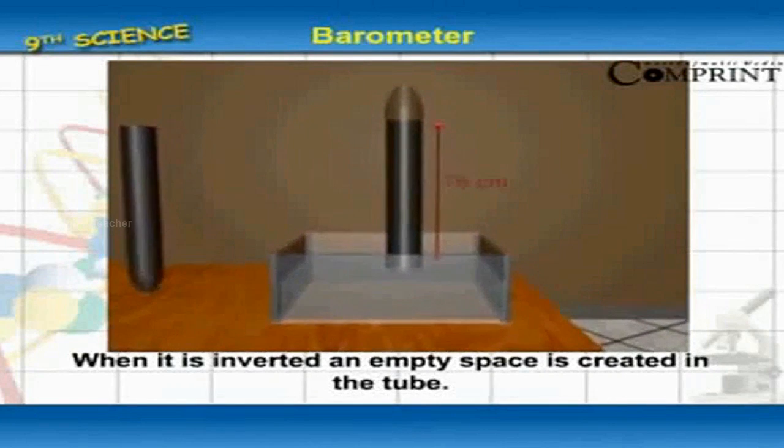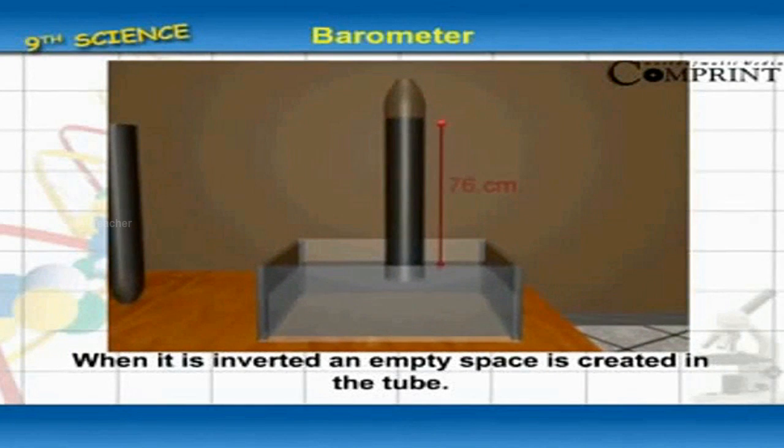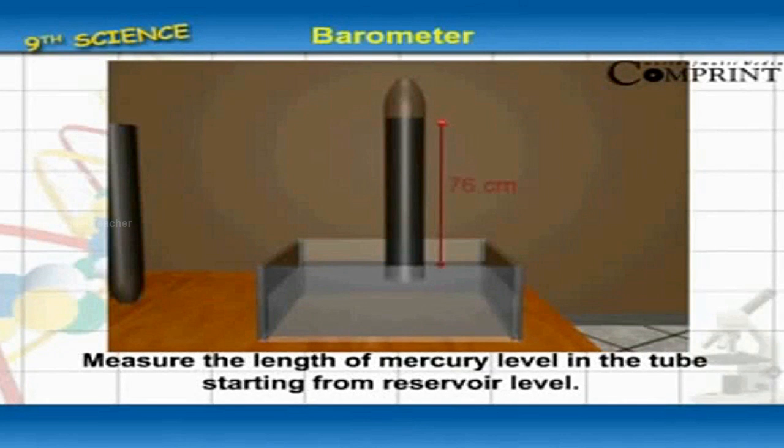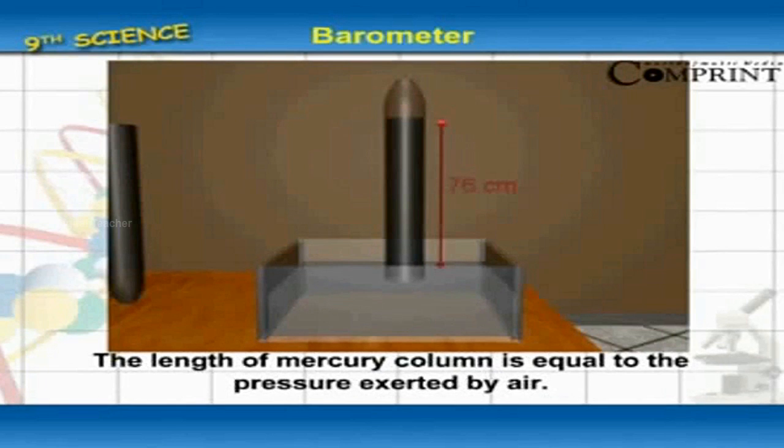When it is inverted, an empty space is created in the tube. Measure the length of mercury level in the tube starting from reservoir level. The level of mercury column is equal to the pressure exerted by air.